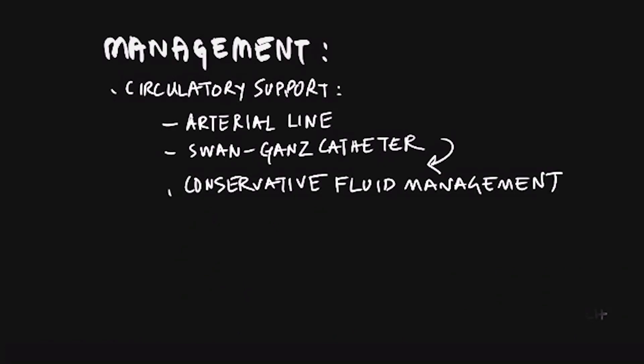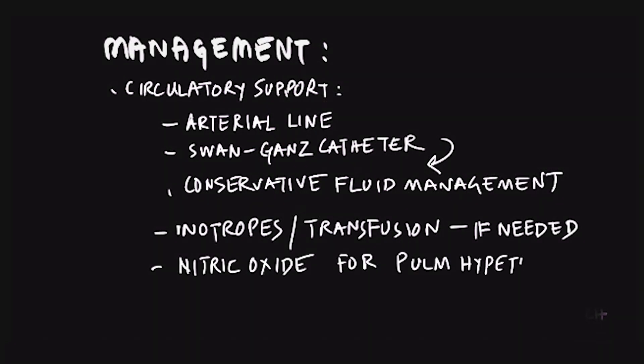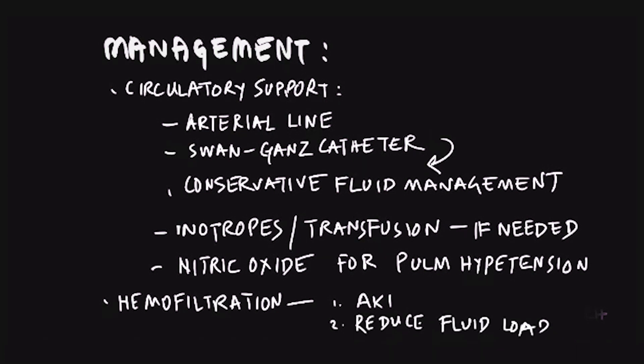To maintain circulatory support, invasive hemodynamic monitoring with an arterial line and Swan-Ganz catheter helps in diagnosis and monitoring of pulmonary capillary wedge pressure and cardiac output. A conservative fluid management approach improves outcome. Inotropes and blood transfusions are usually not needed but can be considered on a case-by-case basis. Consider treating pulmonary hypertension with low-dose nitric oxide, which is a pulmonary vasodilator. If the patient develops renal failure, hemofiltration may be considered and may also help achieve a negative fluid balance.